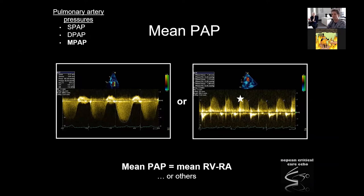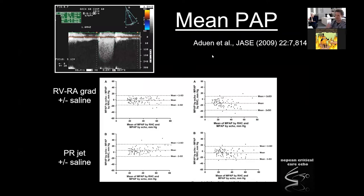Mean pulmonary artery pressure can be obtained by either tracing out the tricuspid regurgitation jet — dependent on a decent trace with correct Doppler angle, correct gain, and accurate tracing ignoring the fuzz — which gives you the mean RV-to-RA gradient. Alternatively, you can use the pulmonary regurgitation trace grabbing the early diastolic pressure and adding right atrial pressure. Bubble studies with agitated saline can sometimes improve the trace. This is not something I routinely do, but it might be useful to mention in an exam.